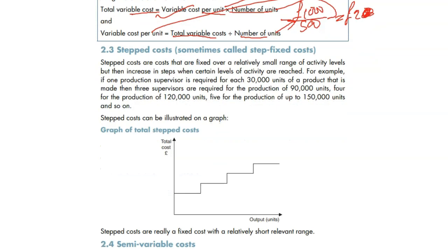Next one is about stepped cost, sometimes called stepped fixed cost. This is a cost which remains constant for some time, then it goes up and remains constant again, then it goes up and remains constant again. Let's get started with an example.